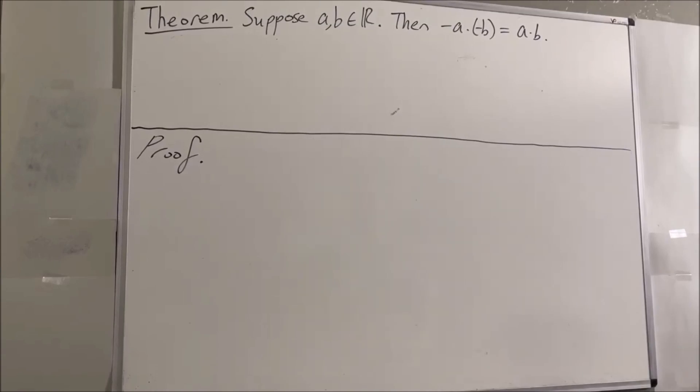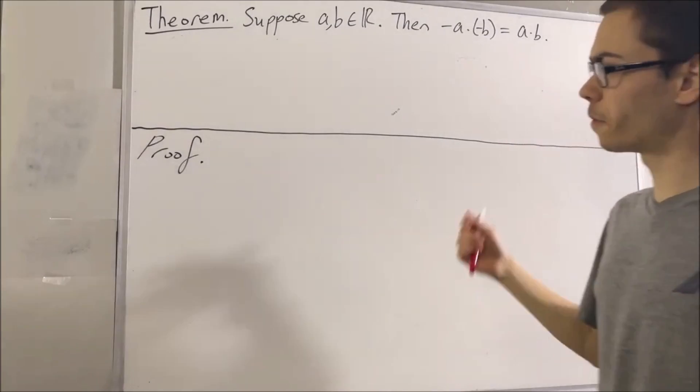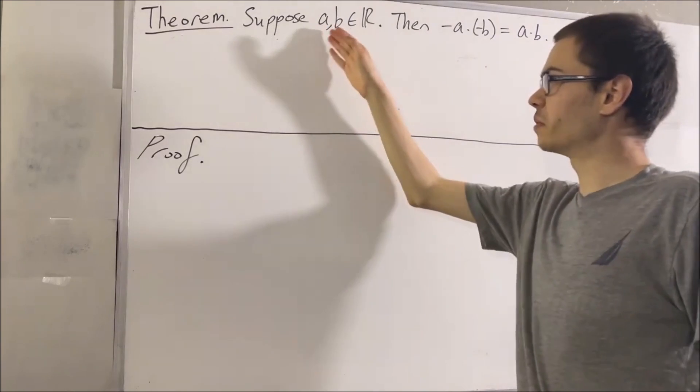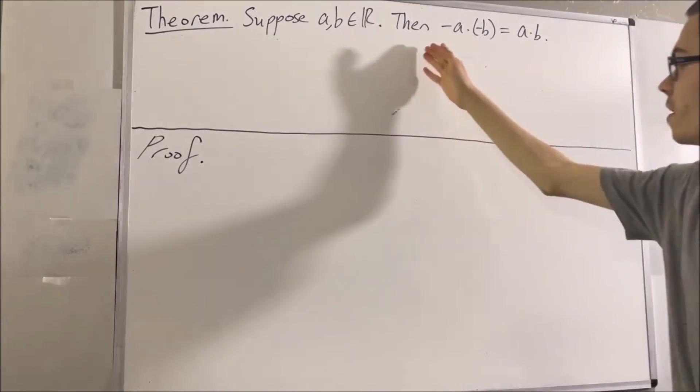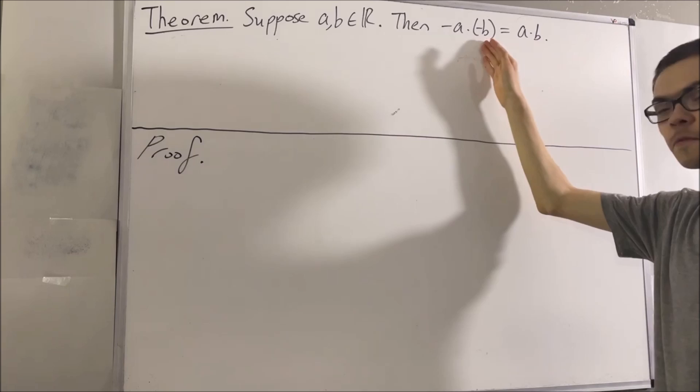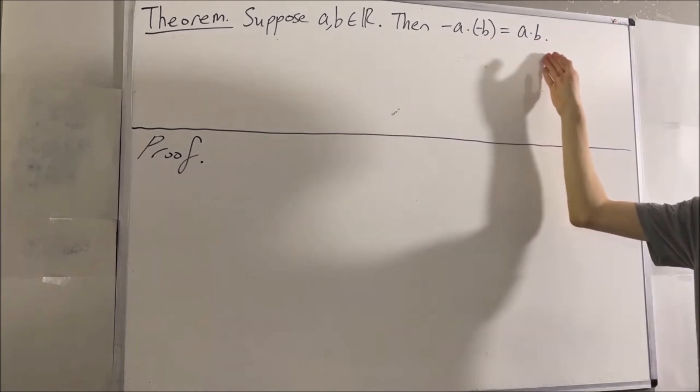Hello! In this video, we are going to prove the following theorem. Suppose A and B are real numbers. Then the negative of A times the negative of B is equal to A times B.